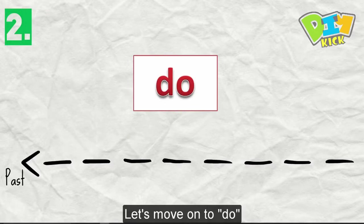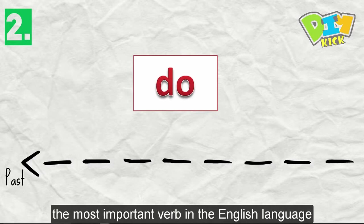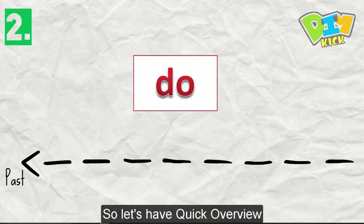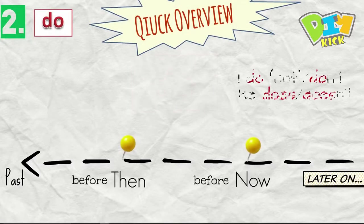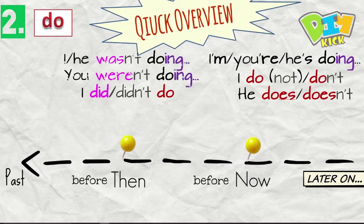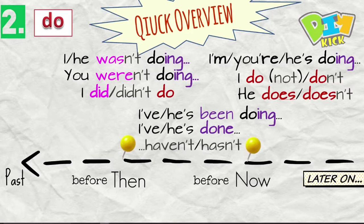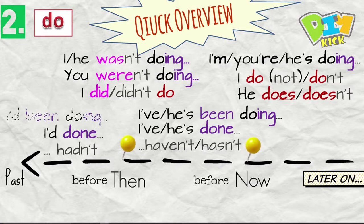Let's move on to do. We may say it's the second most used or the most important verb in the English language. So let's have a quick overview. For example, we'll say I do or I don't. He does, he doesn't. I'm doing, you're doing, he's doing. I did or didn't do. I was doing or you were doing or the negative. I wasn't, you weren't doing. I've done, he's done. I've been doing, he's been doing. I'd done or I hadn't done. I'd been doing.